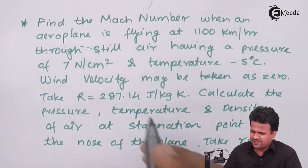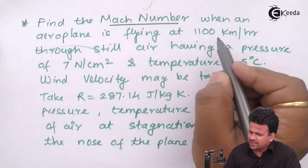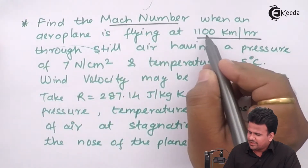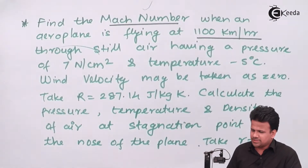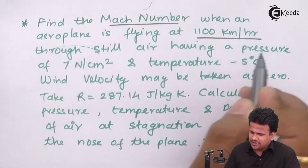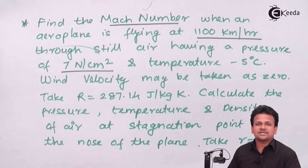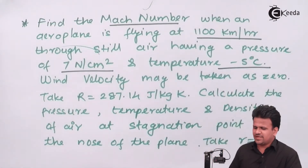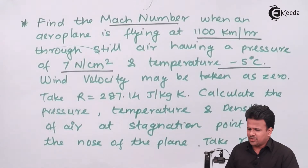We have a problem which states: find the Mach number when an aeroplane is flying at a velocity of 1100 kilometers per hour through still air having a pressure of 7 Newton per centimeter square. The temperature is minus 5 degrees Celsius — at higher altitude the temperature tends to be very low.